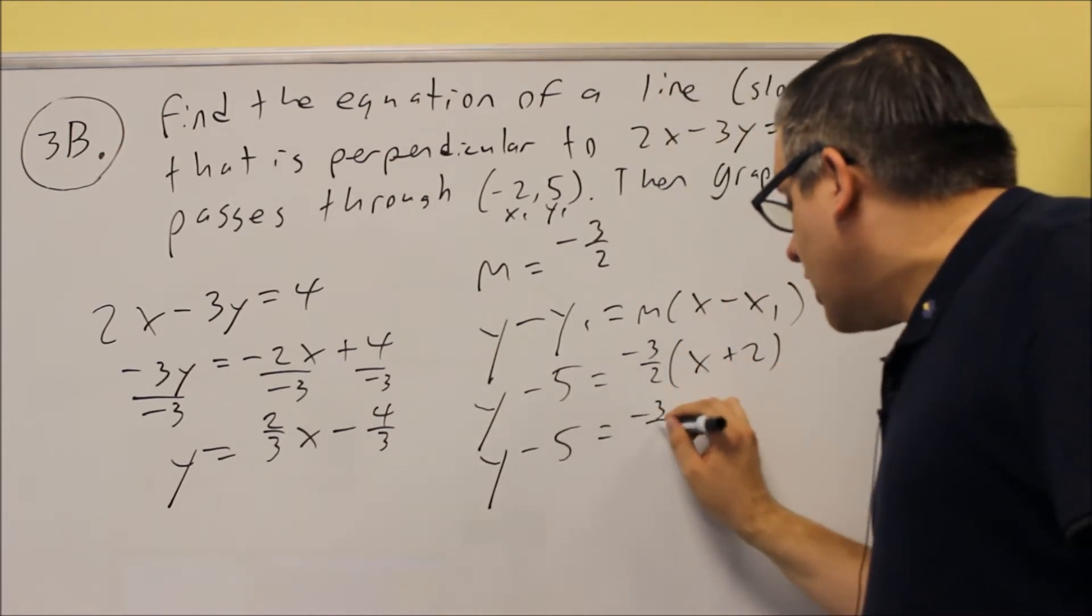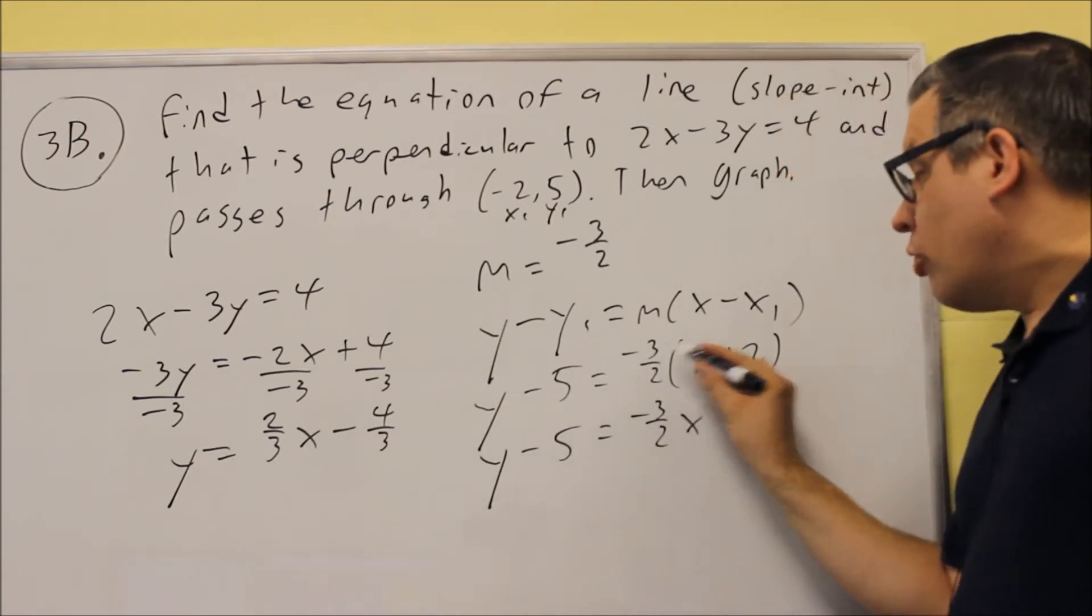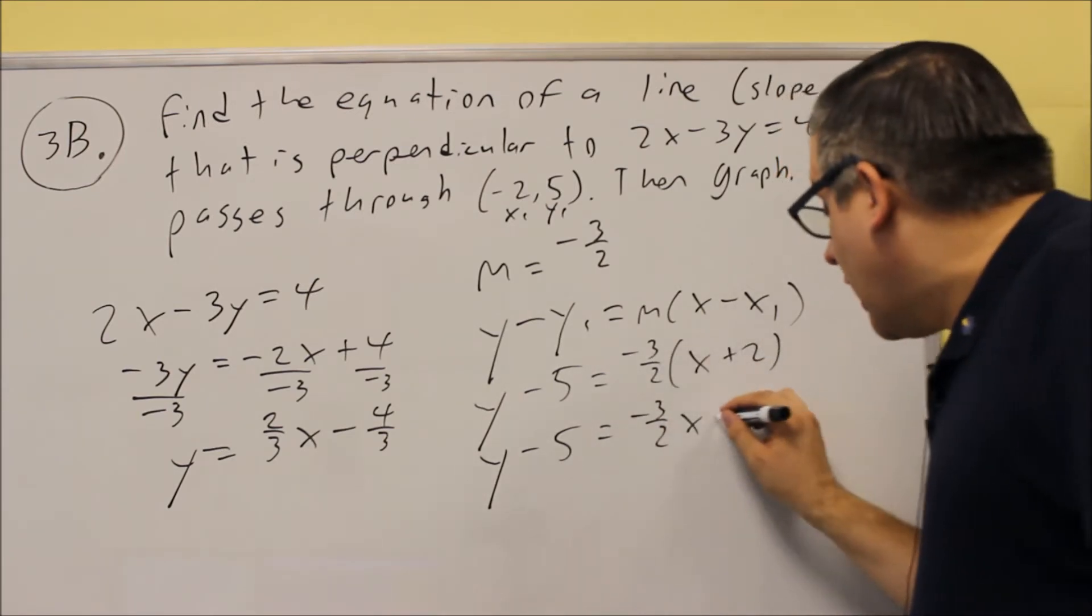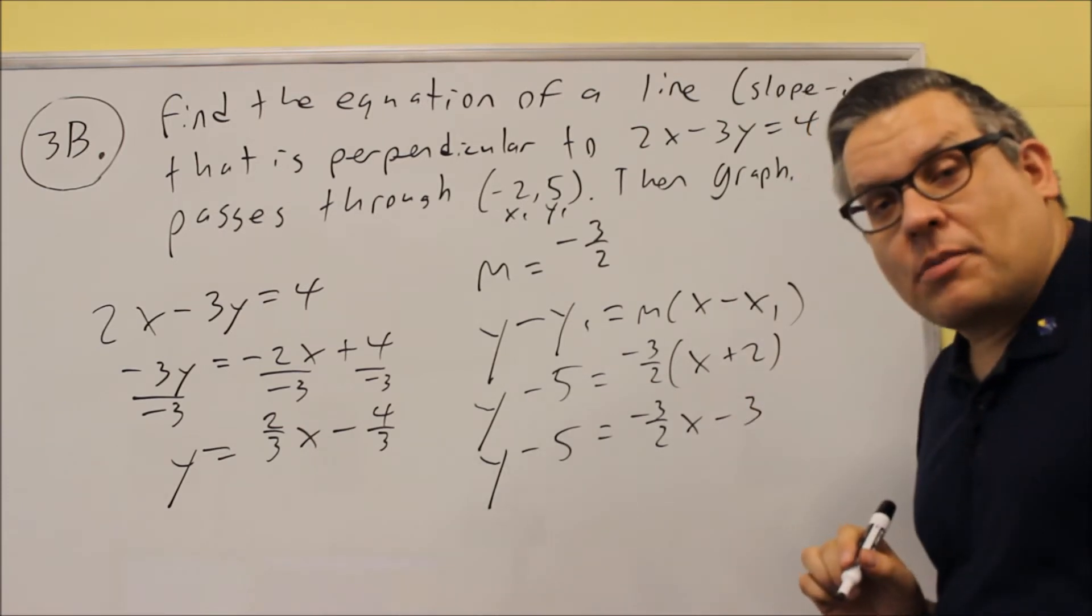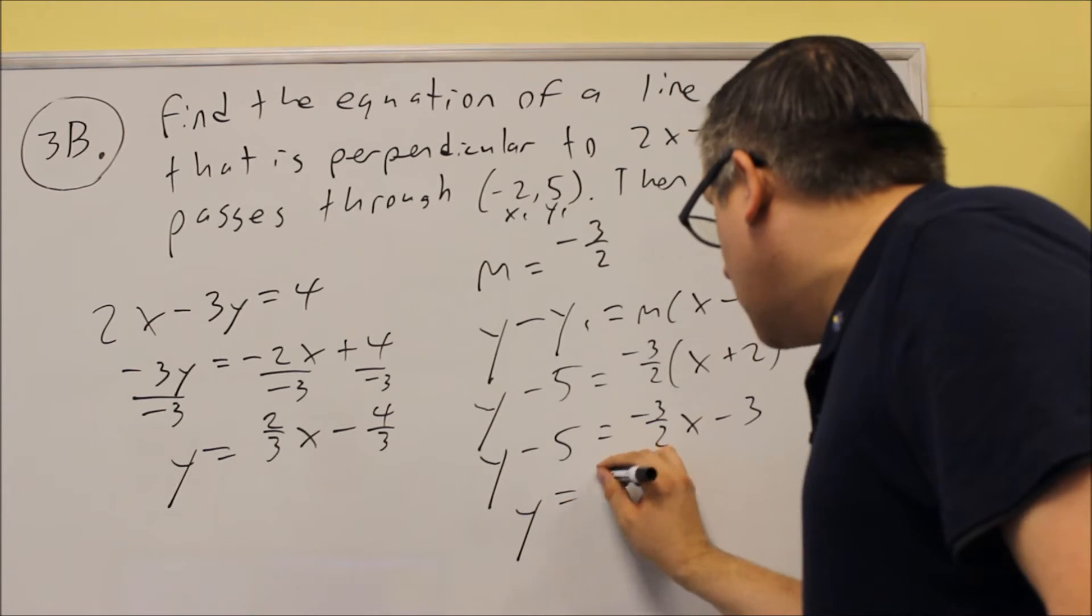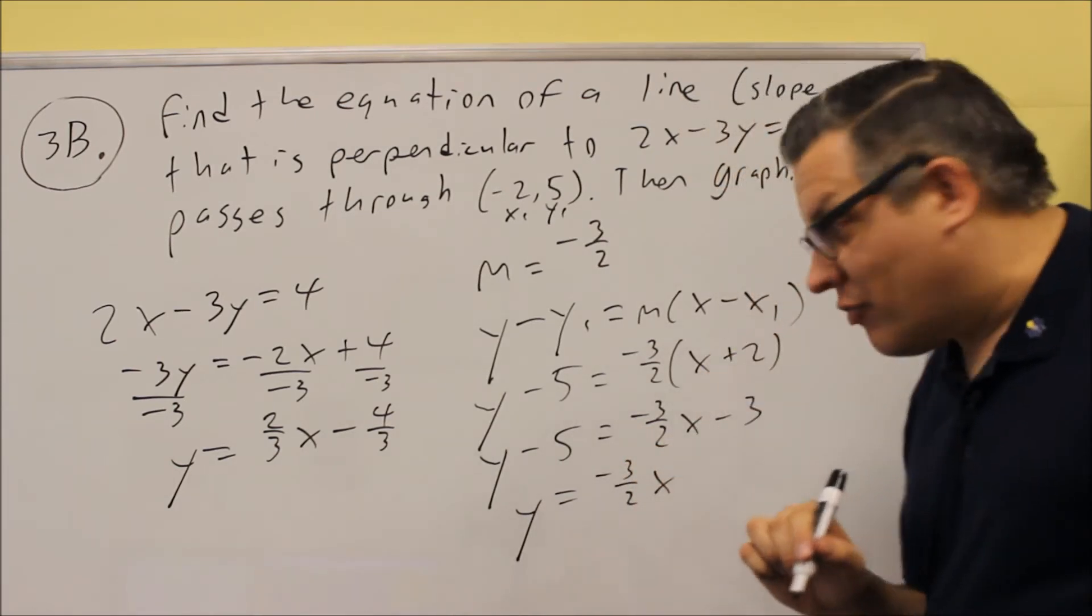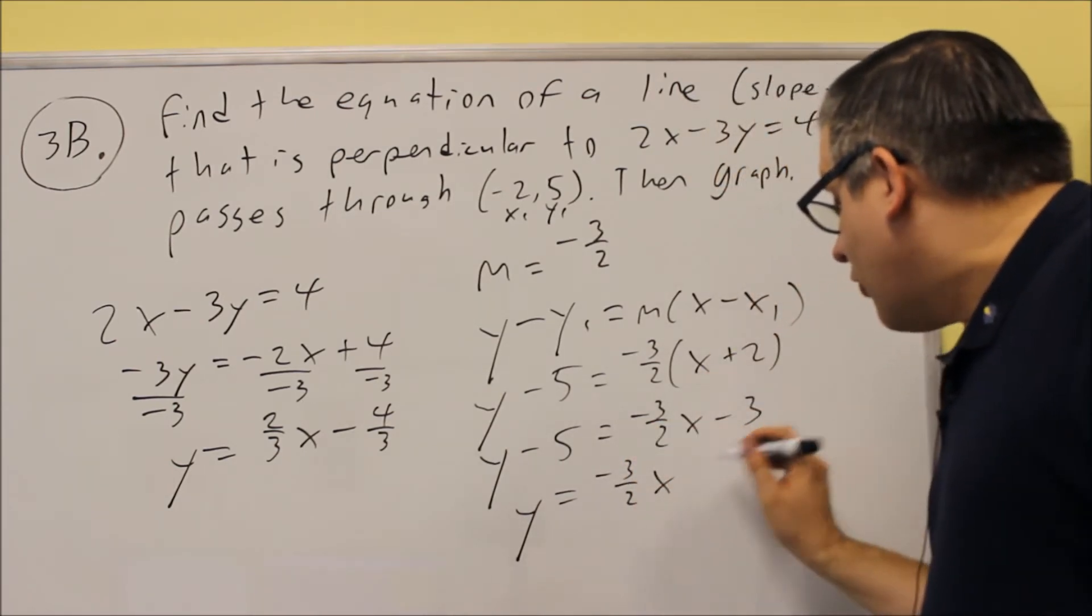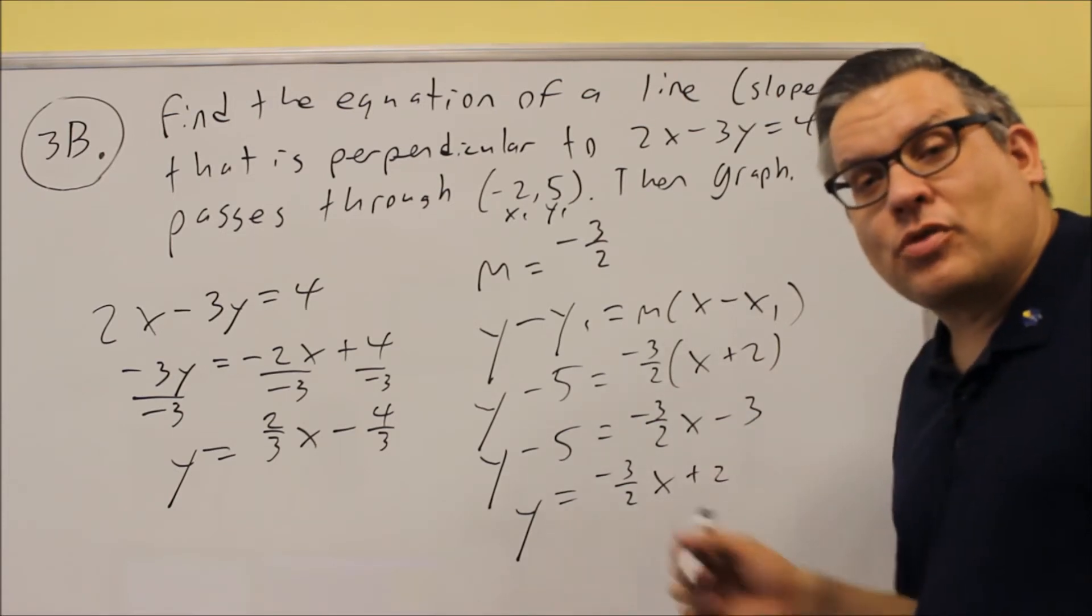We're going to first multiply by the negative 3/2. Then we get negative 3/2X, and when we multiply it by the 2 here, the 2s are going to cancel and you'll get negative 3. Then we're going to add 5 to both sides. Your equation that you'll eventually graph here is going to be, when we add 5, negative 3/2X plus 2.